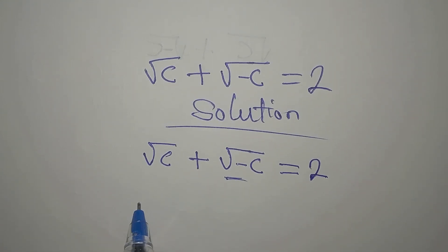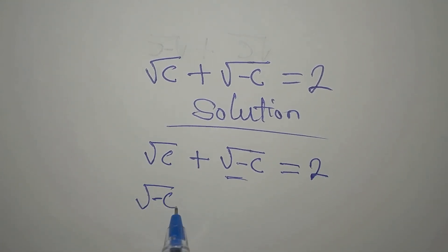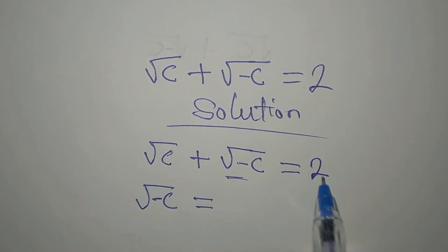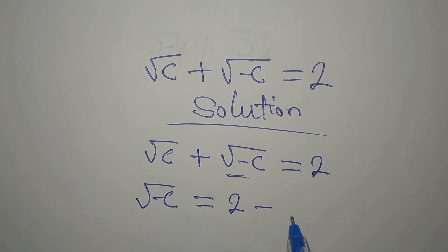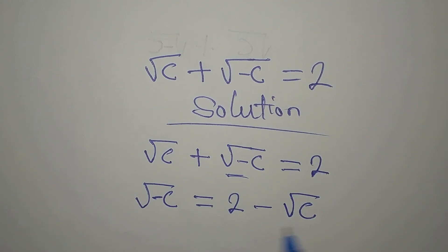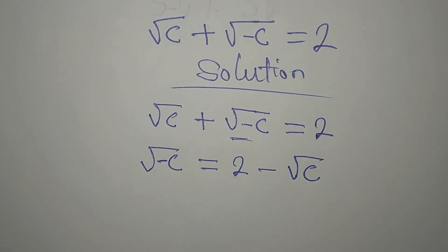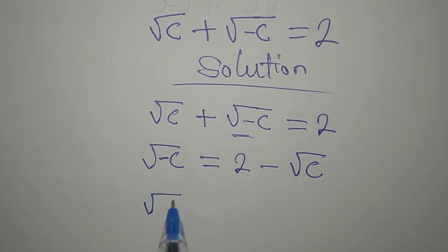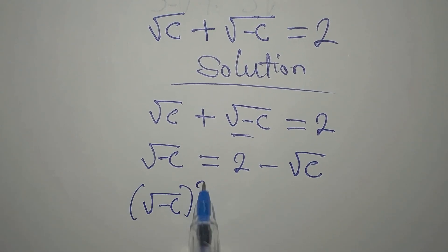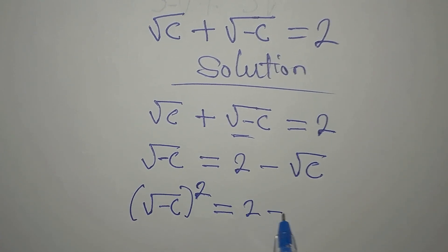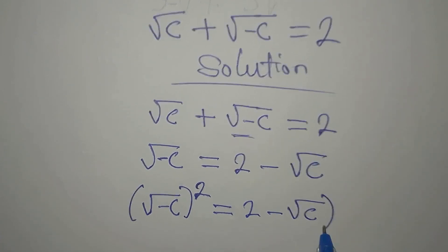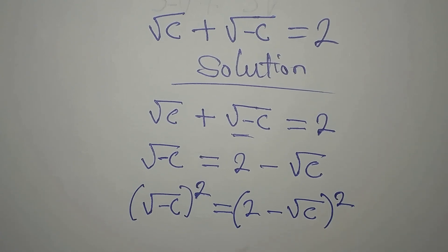I will have square root of negative c equals 2 minus square root of c. The next target is to remove the square root, so I will do that by squaring this. Then on the other hand, we have 2 minus square root of c, and this will be squared.